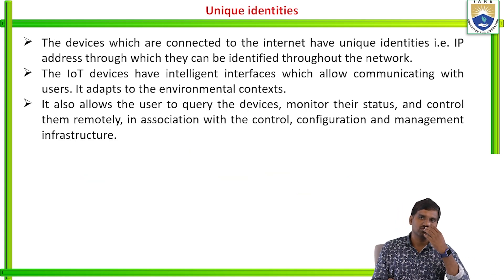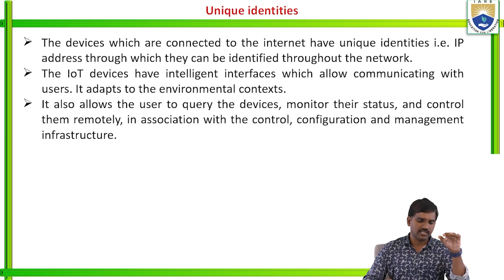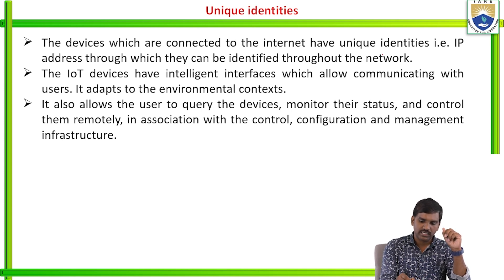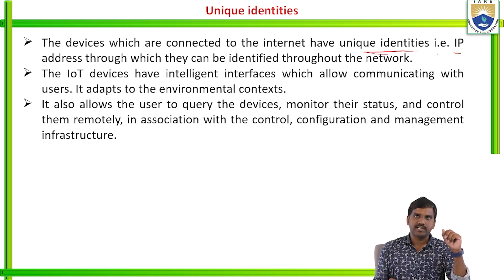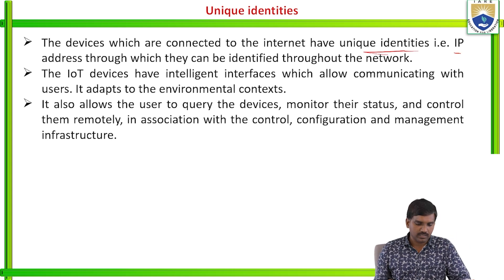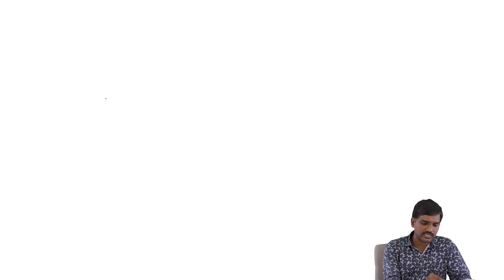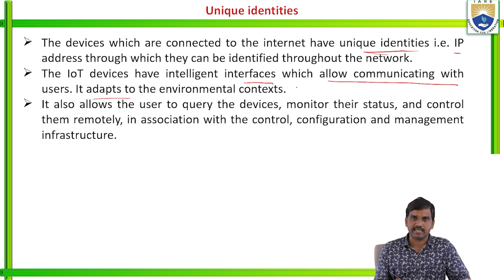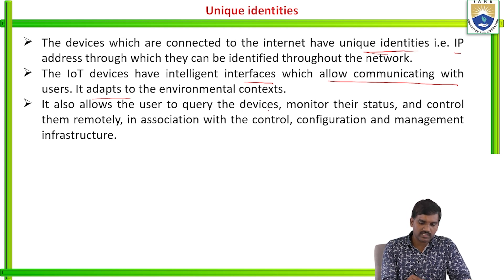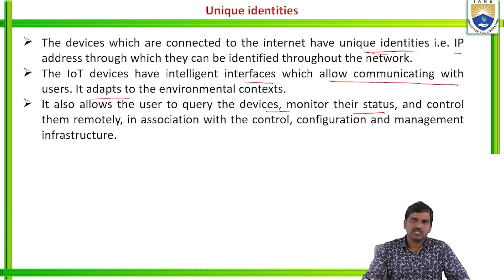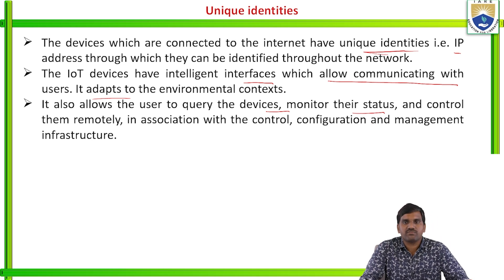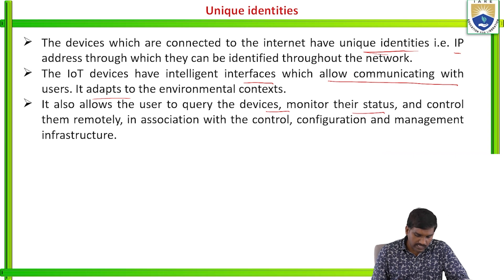Unique identities: all IoT devices maintain unique identities depending on the application. Devices connected to the internet have unique identities — that is, IP addresses — through which they can be identified throughout the network. IoT devices have intelligent interfaces which allow communicating with users, adapting to environmental context, and allowing users to carry the devices, monitor their status and control them remotely in association with the control, configuration and management infrastructure.